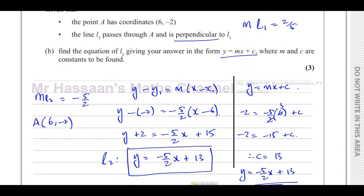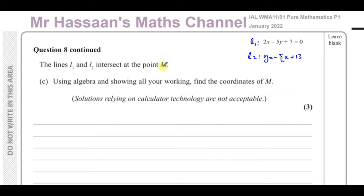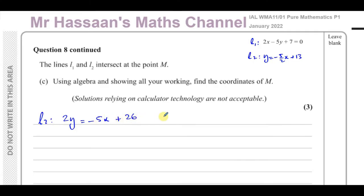Part C says the lines L1 and L2 intersect at point M. Using algebra, find the coordinates of M. We need to solve these two equations simultaneously. To avoid fractions, I'll rewrite line 2 by multiplying everything by 2: 2y equals minus 5x plus 26, or rearranged as 5x plus 2y minus 26 equals 0. Line 1 has the equation 2x minus 5y plus 7 equals 0.